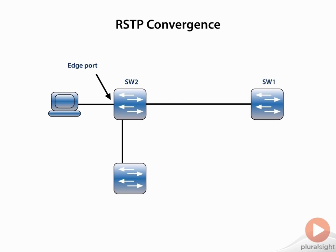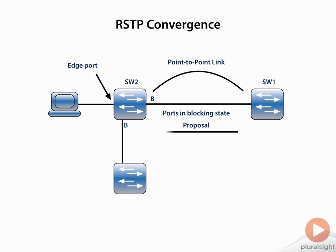We've connected a link between Switch 2 and Switch 1. This is what we would call a point-to-point link. As soon as I recognize that I'm connected to another switch and that there are BPDUs there, I need to immediately block all of my ports because something's changed in the topology. Switch 1, who is the root bridge in this example, sends a proposal over to Switch 2, essentially saying: "I'm the root bridge and I think you should send your traffic to me as the root."